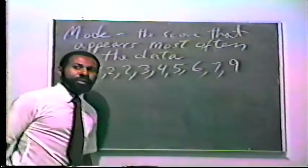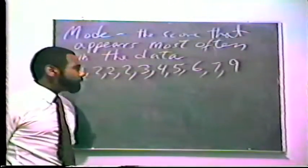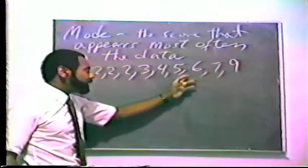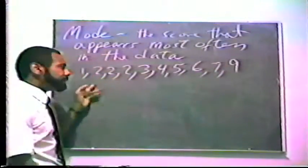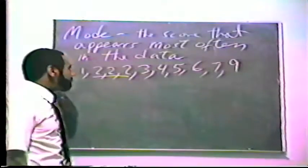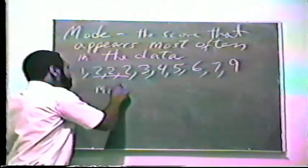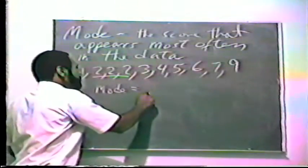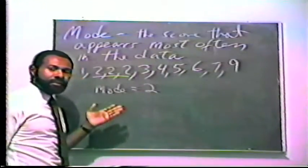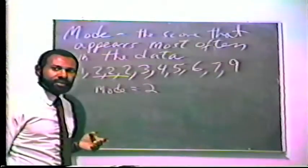We can see that the score that appears most often in this data set would be 2. Therefore, the mode for this data set is 2. And the mode is a measure of central tendency.